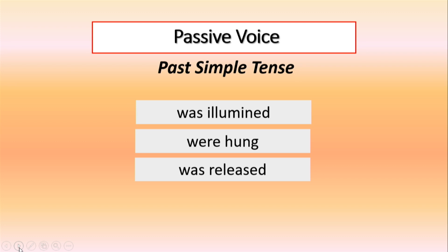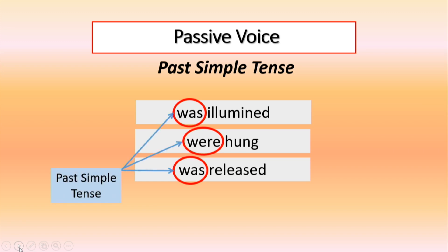How do we know? We have was and were before the main verb, and was and were are in the past simple tense.